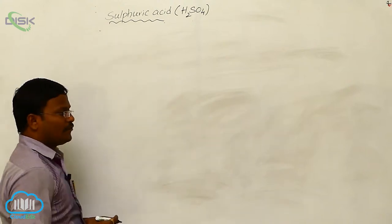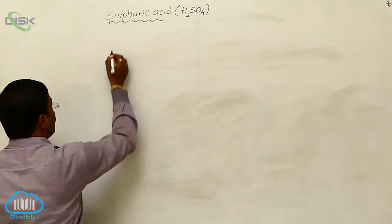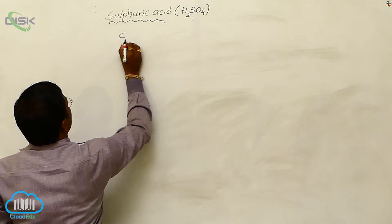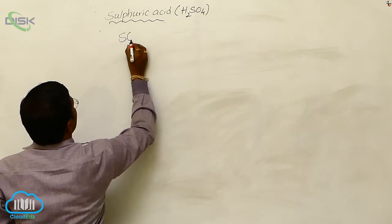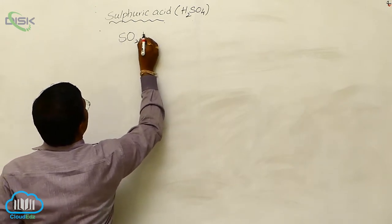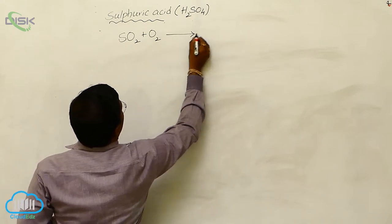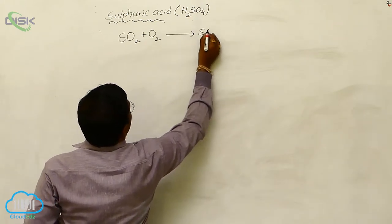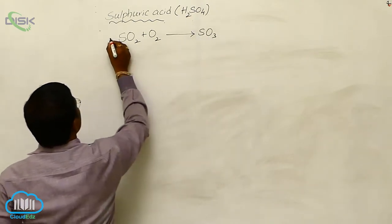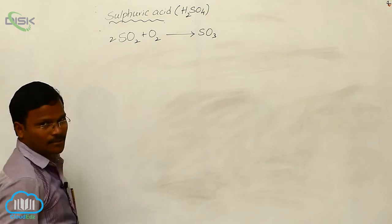During the preparation of sulfuric acid in the contact method, the most important step is the conversion of sulfur dioxide into sulfur trioxide. This is the most important step in the preparation of sulfuric acid in the contact process.